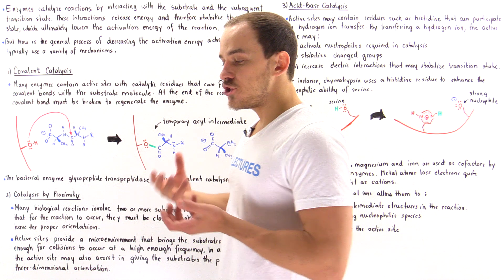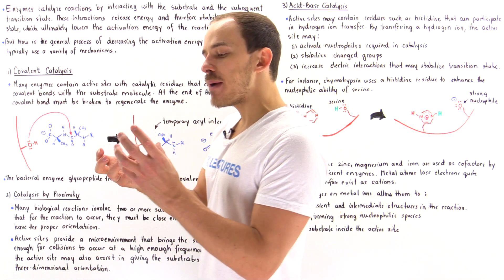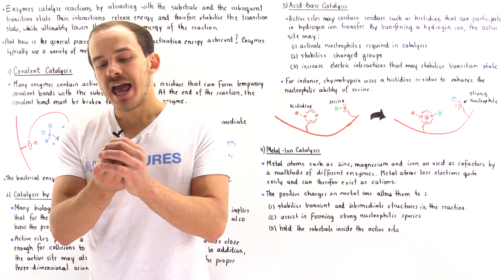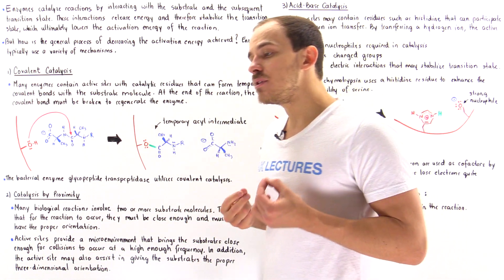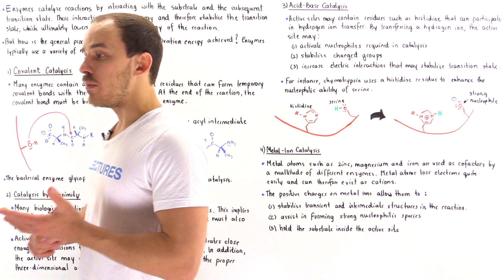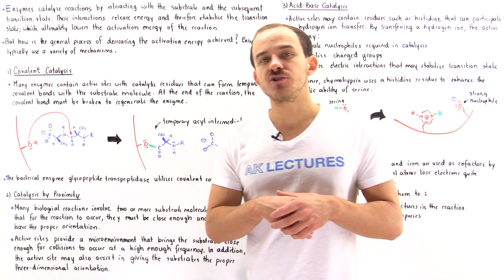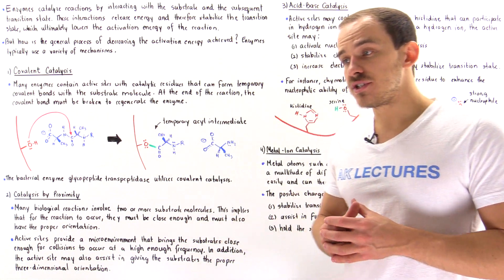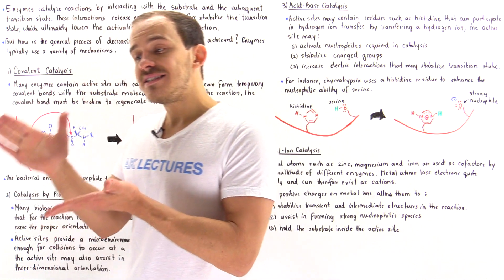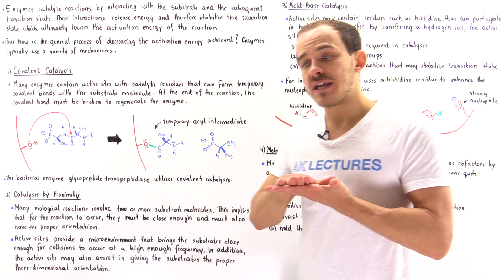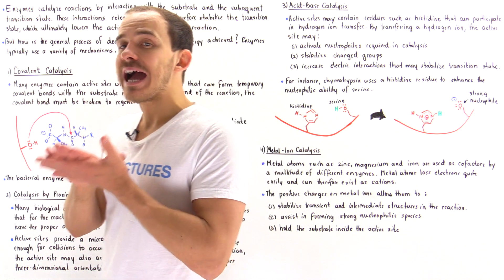We said that the way enzymes achieve this is by basically binding that substrate molecule into a special environment we call the active site. Inside the active site, there's a conformational change that takes place and that stabilizes not only the substrate molecule, but it also stabilizes the transition state in that particular reaction. By stabilizing the transition state, that releases a certain amount of binding energy into the environment and that decreases the energy of that transition state — it lowers the activation energy.